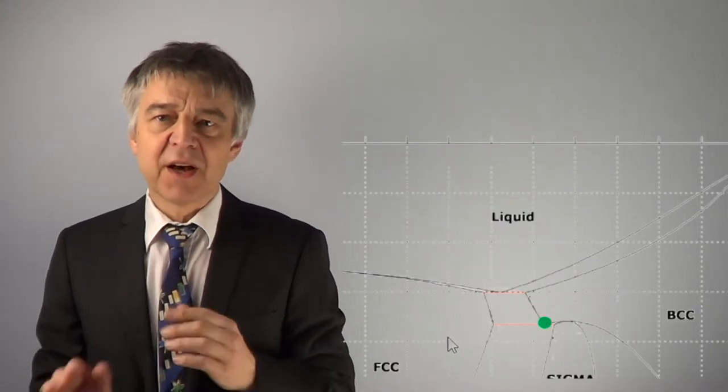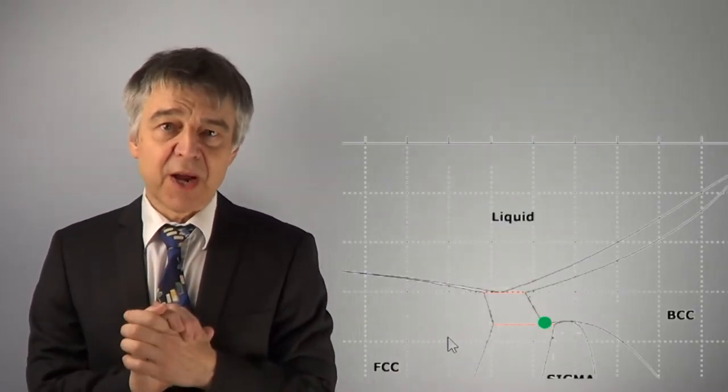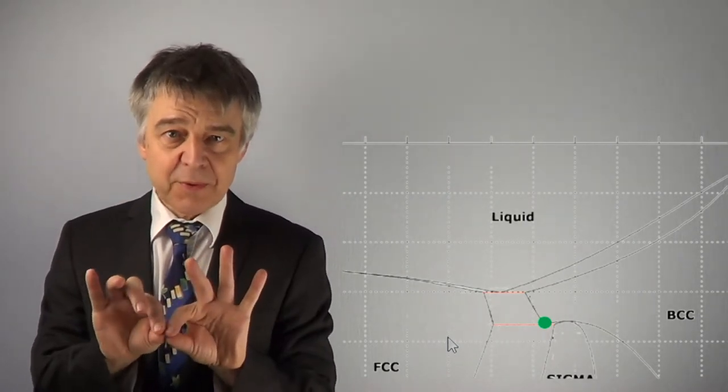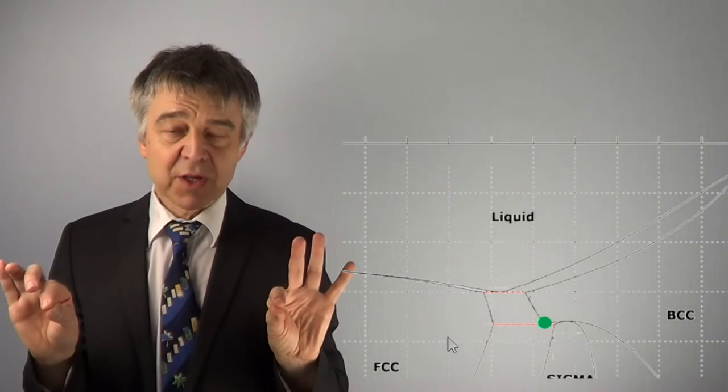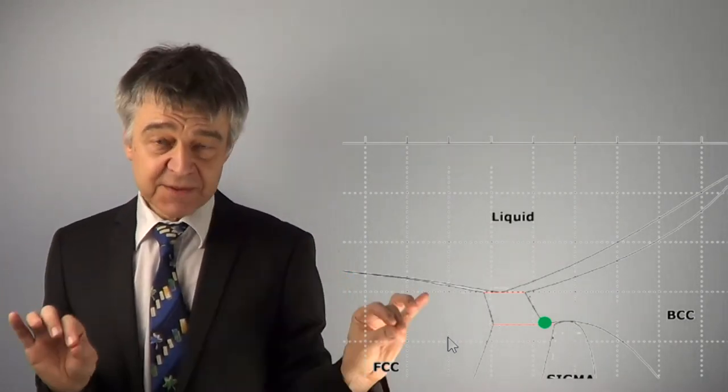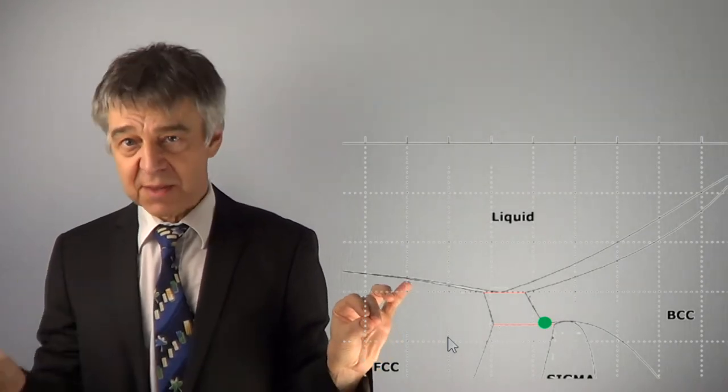This structure can be found here in the phase diagram. The BCC phase will separate at about 1270°C into FCC phase and sigma phase.